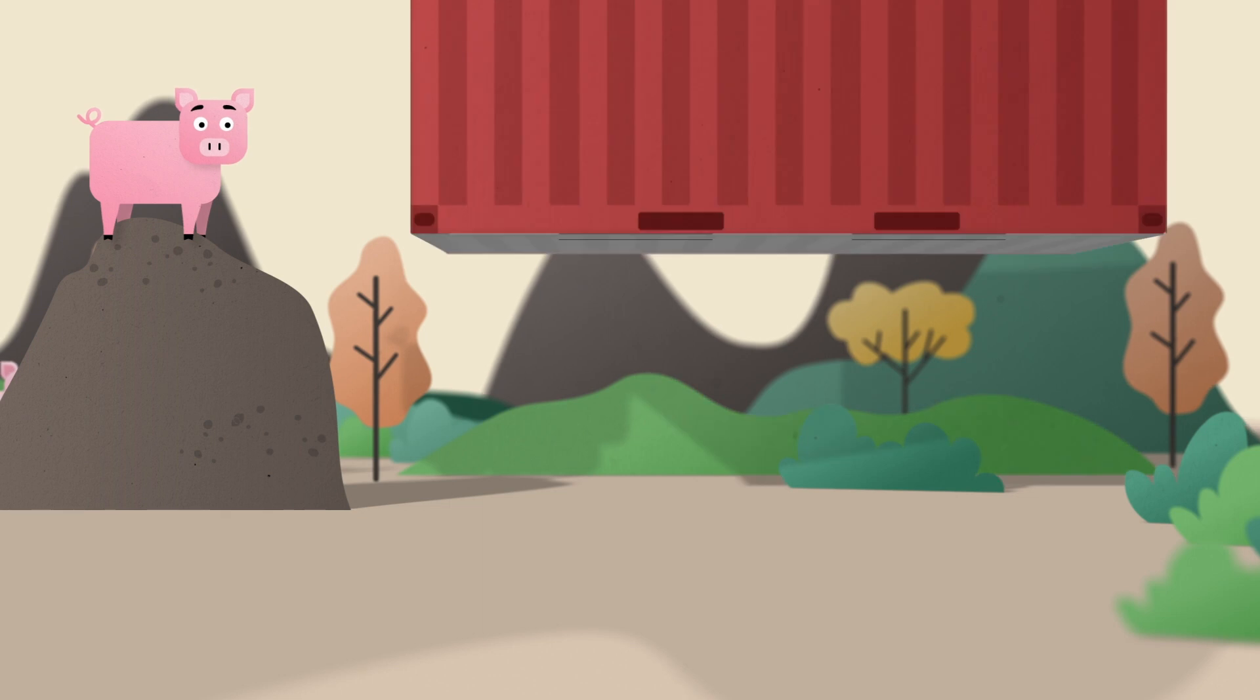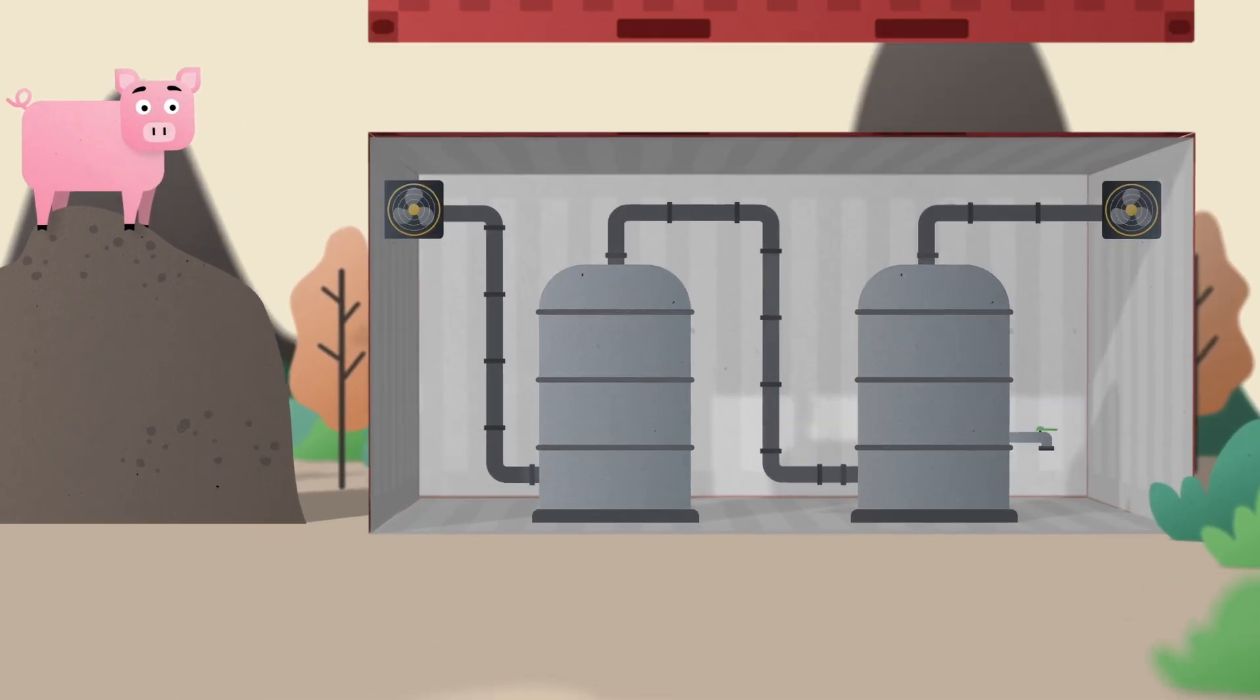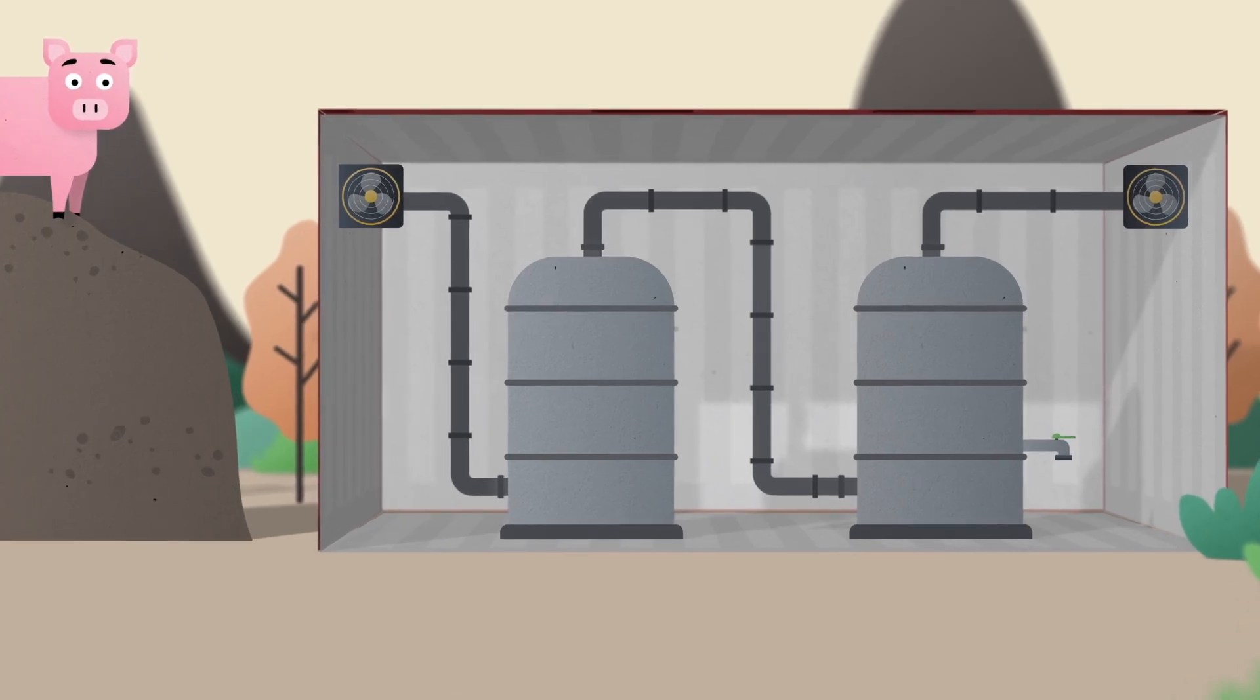An innovative technology called the stripping-scrubbing process is one solution. Transforming manure into effective fertilizer on site.